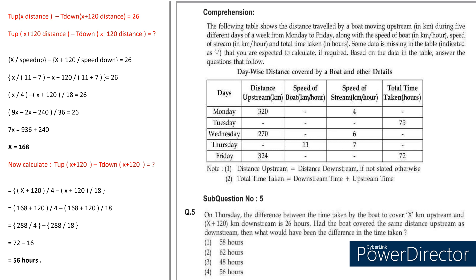Now for the second part of the question: had the boat covered the same distance upstream as downstream — both equal to (X plus 120) — what would the difference in time be? Converting to distance-by-speed: (X plus 120) divided by upstream speed 4, minus (X plus 120) divided by downstream speed 18. After all calculations, the total time difference is 56 hours.